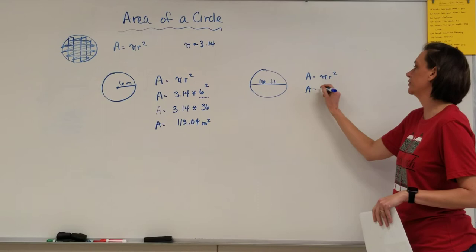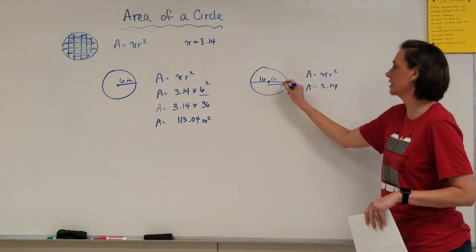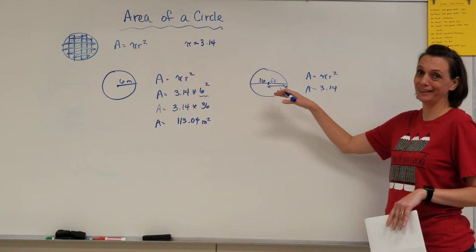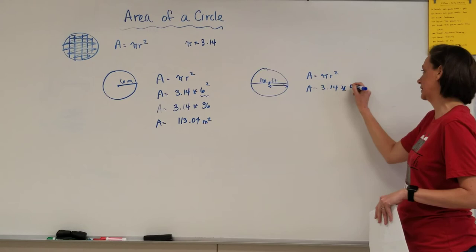So I have to go, okay, that's 3.14, but my radius is only half of this, not the whole thing. So if my whole thing is 16, I want half of that. My radius is going to be 8 squared.